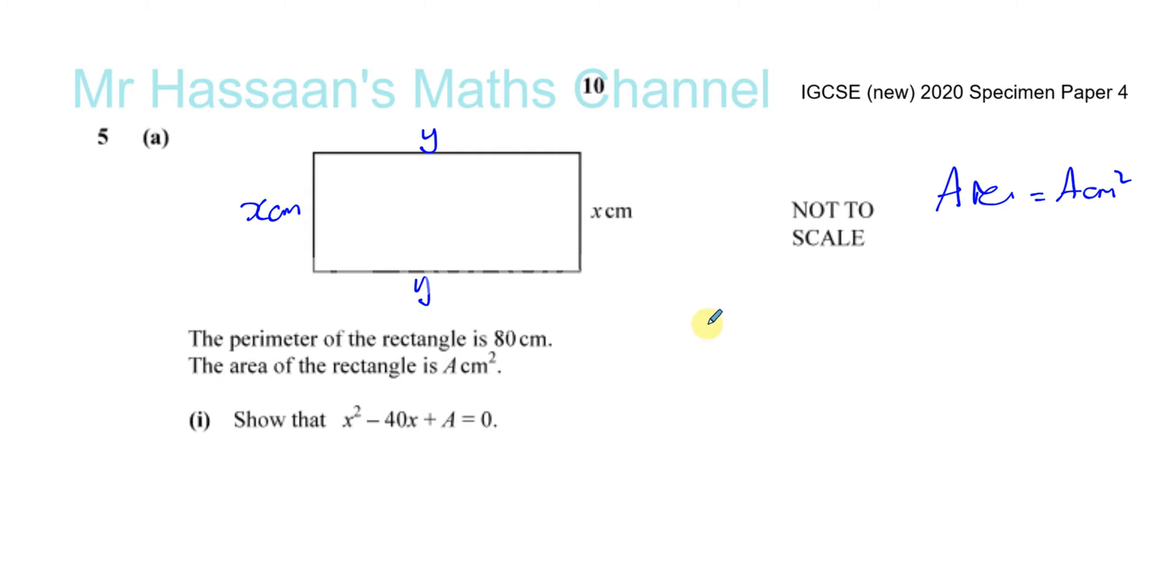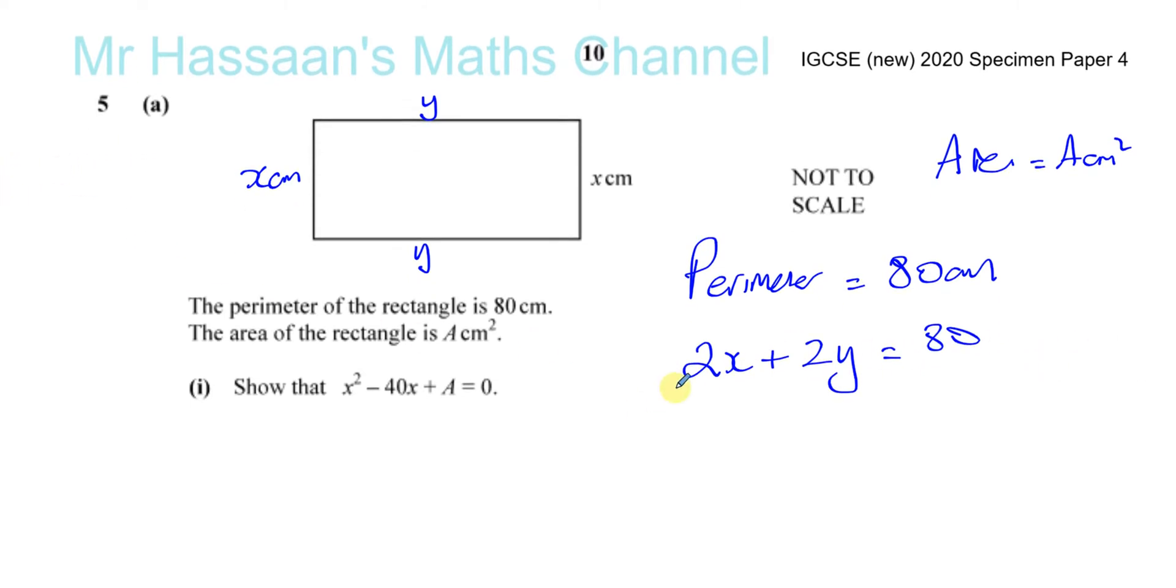So we know about the perimeter. The perimeter is 80 centimeters. Now remember, the perimeter of a shape is the length of its outline. So for a rectangle, it's going to be 2x plus 2y. So you have 2x for this particular rectangle. 2x plus 2y is equal to 80. That's an equation we can form from it. And we can actually simplify this equation a little bit because you can see that all of these terms are divisible by 2. So if we divide the whole equation by 2, both sides of the equation by 2, we've got x plus y equals 80.